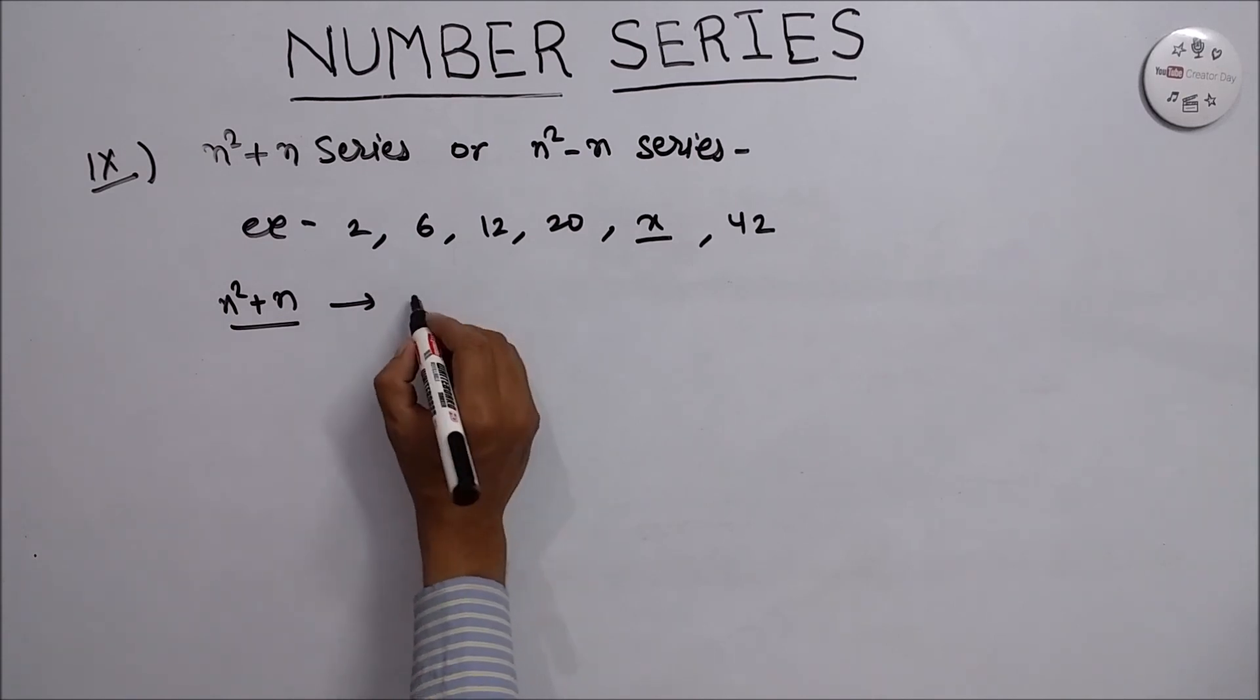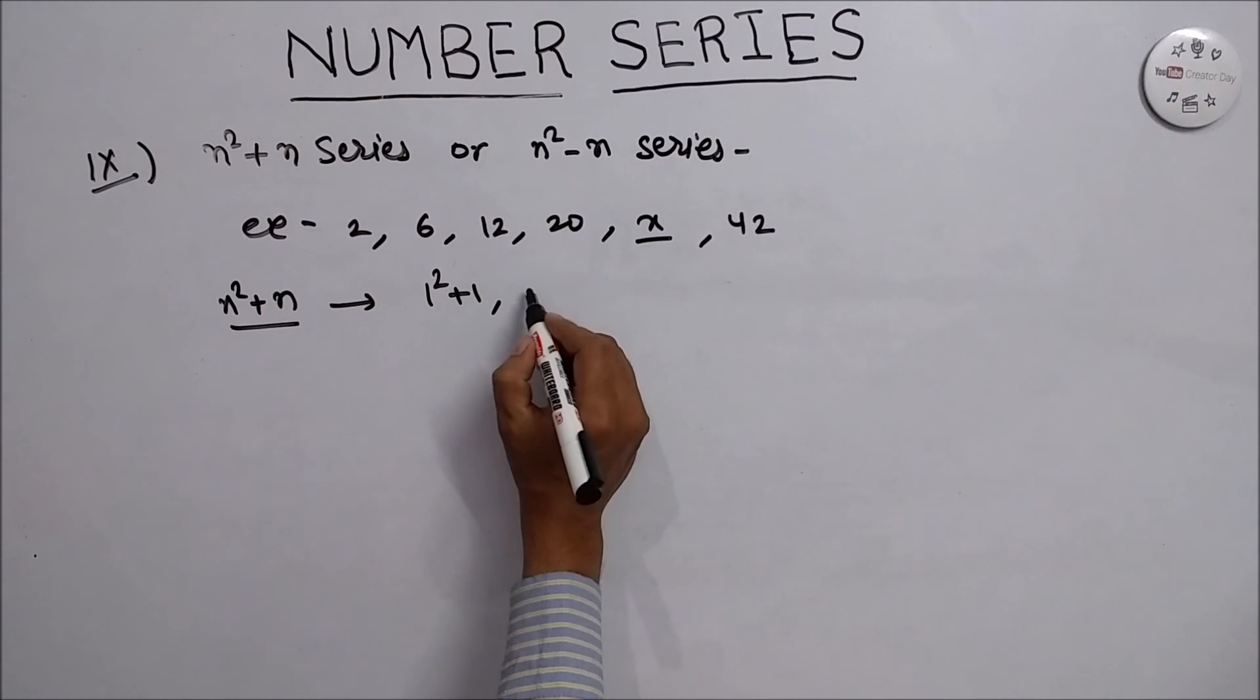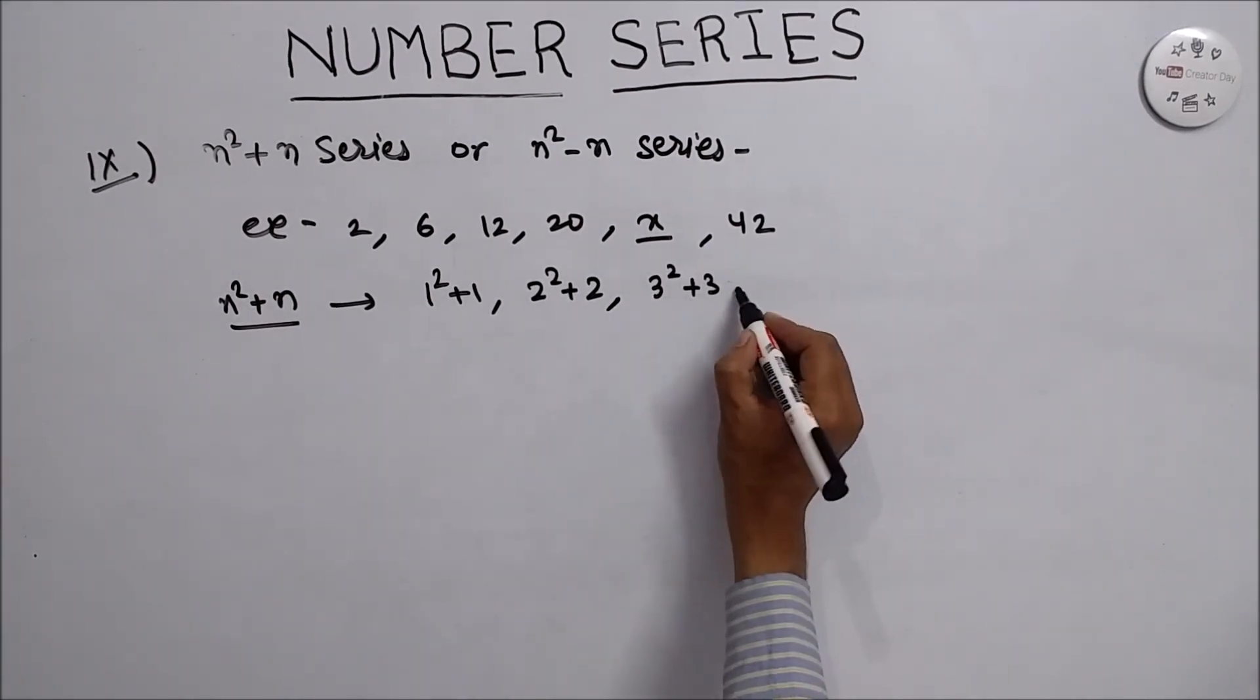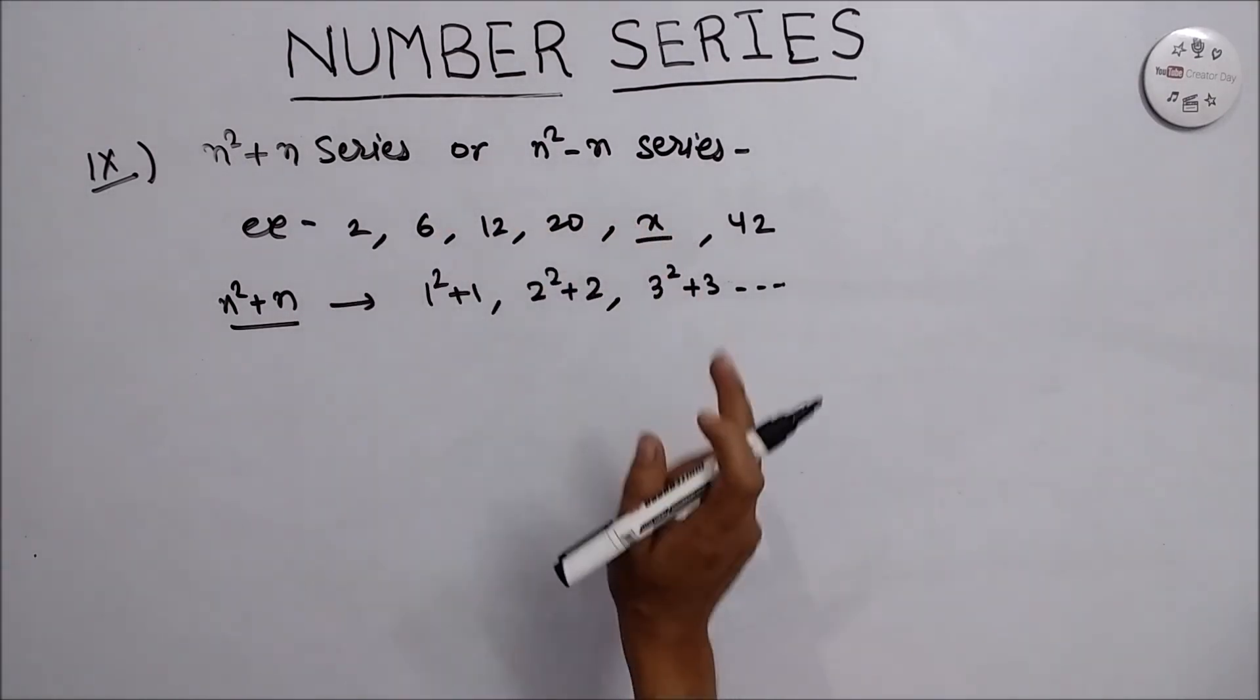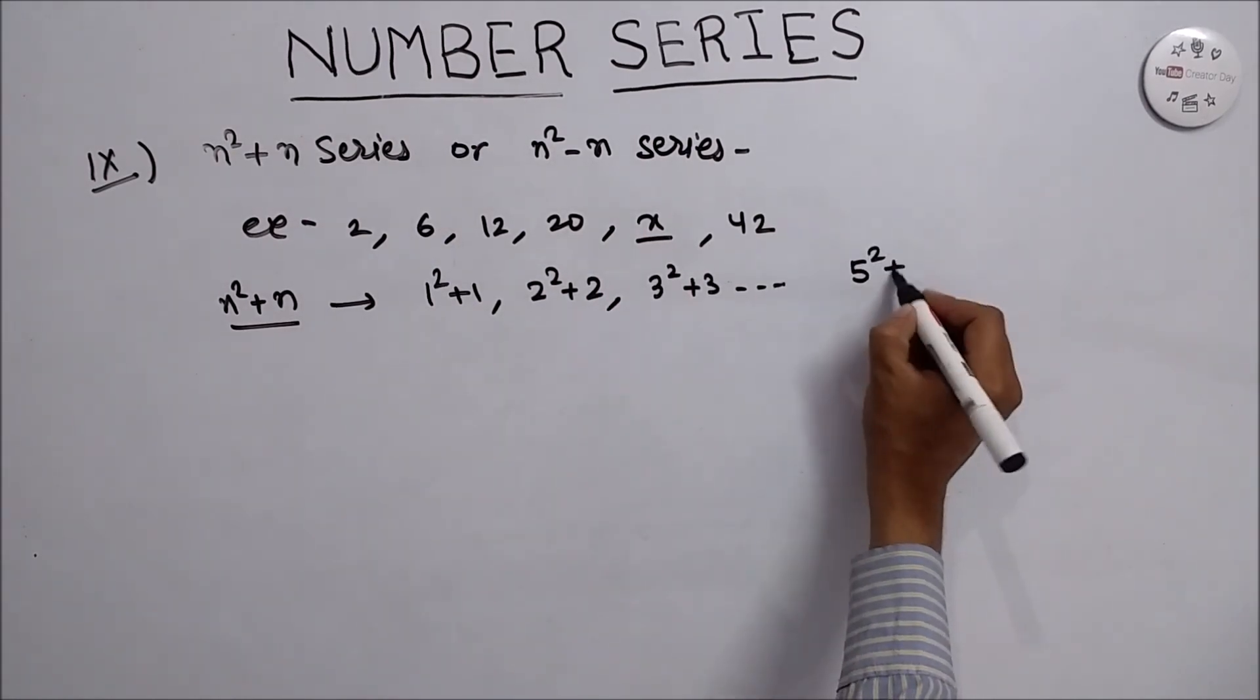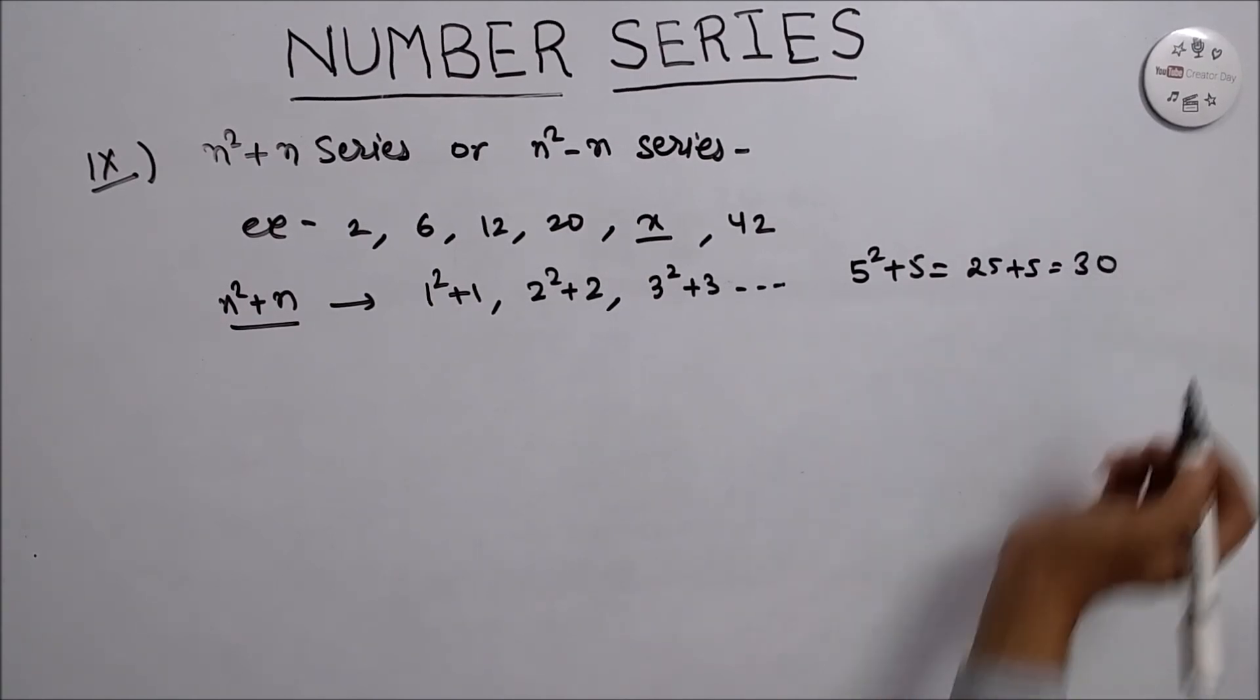So for that, we can say that, that is 1 square plus 1. Again, 2 square plus 2, 3 square plus 3, and so on. For that, if we have to find the value of x, that is 1, 2, 3, 4, 5. That means 5 square plus 5, that is 25 plus 5, is equals to 30.